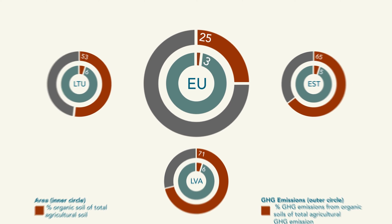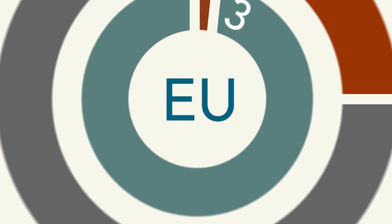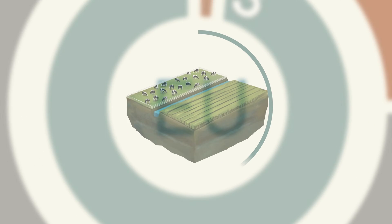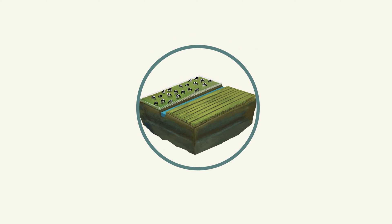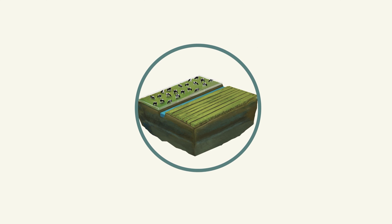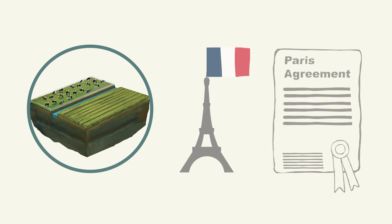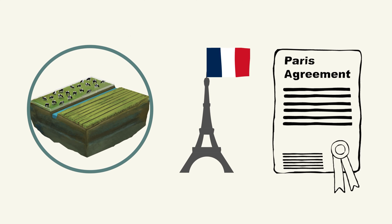By focusing climate action on a relatively small area, significant climate change mitigation targets could be achieved in the agricultural sector that are in line with the Paris Agreement.